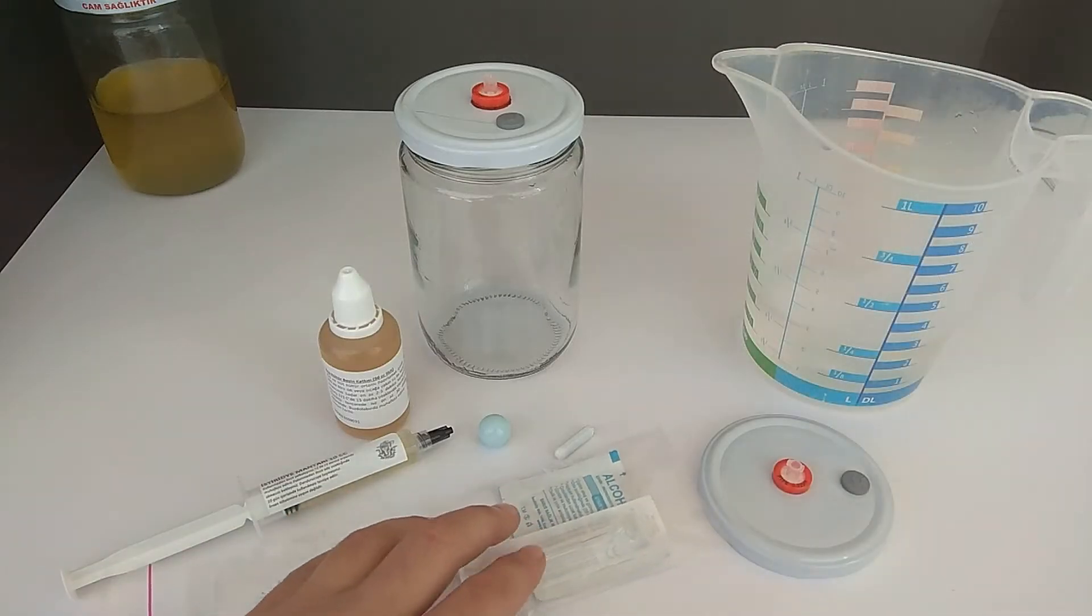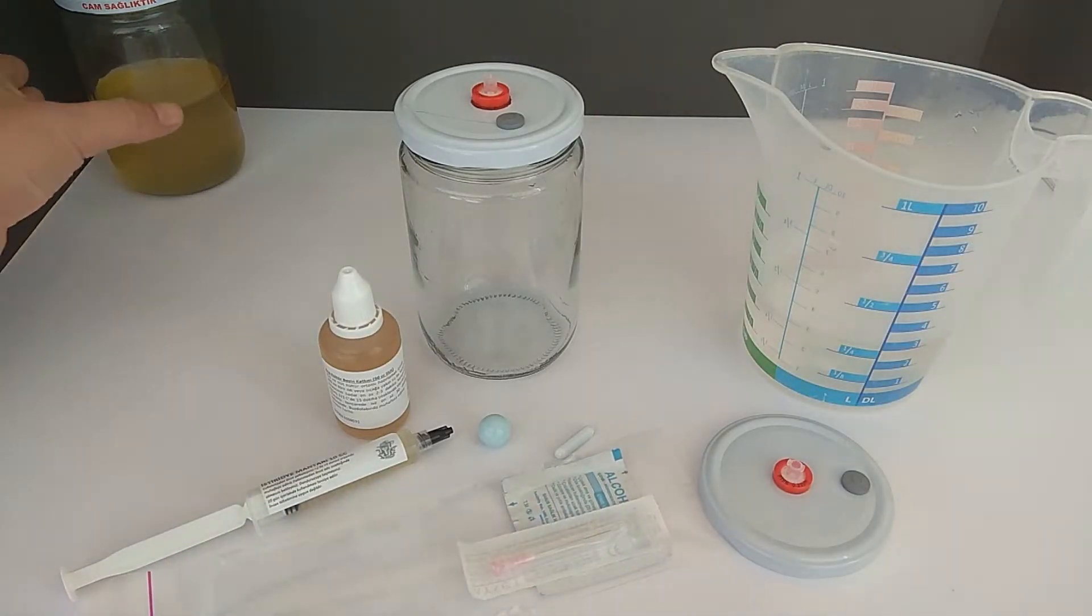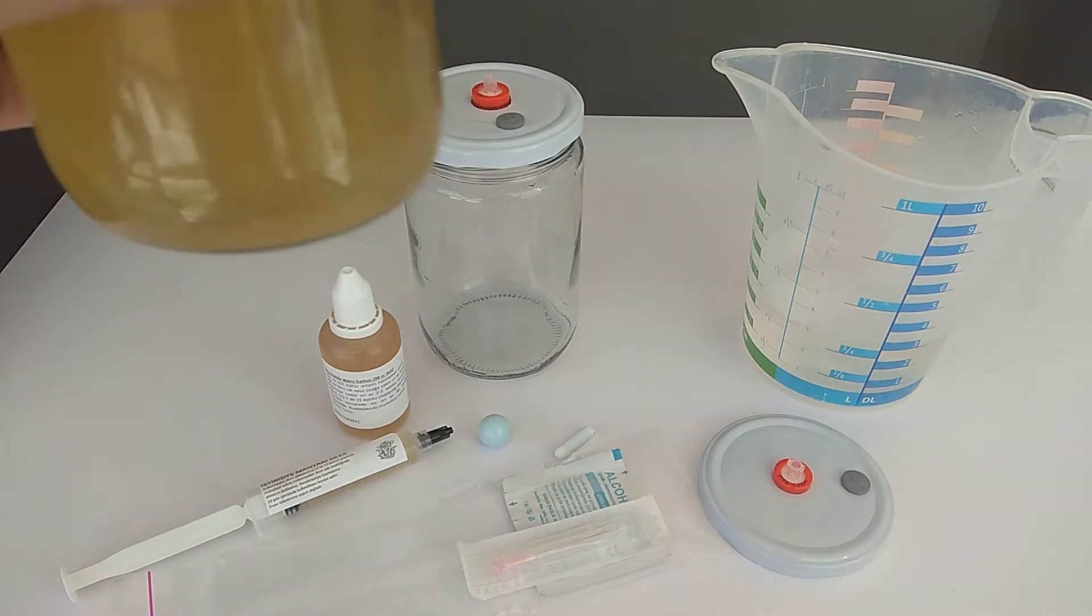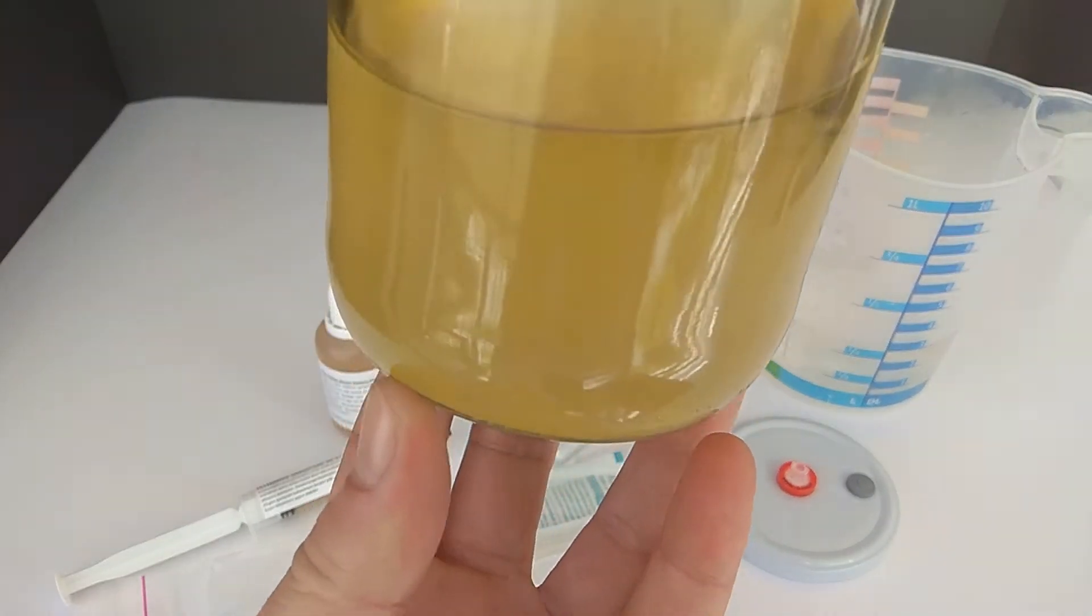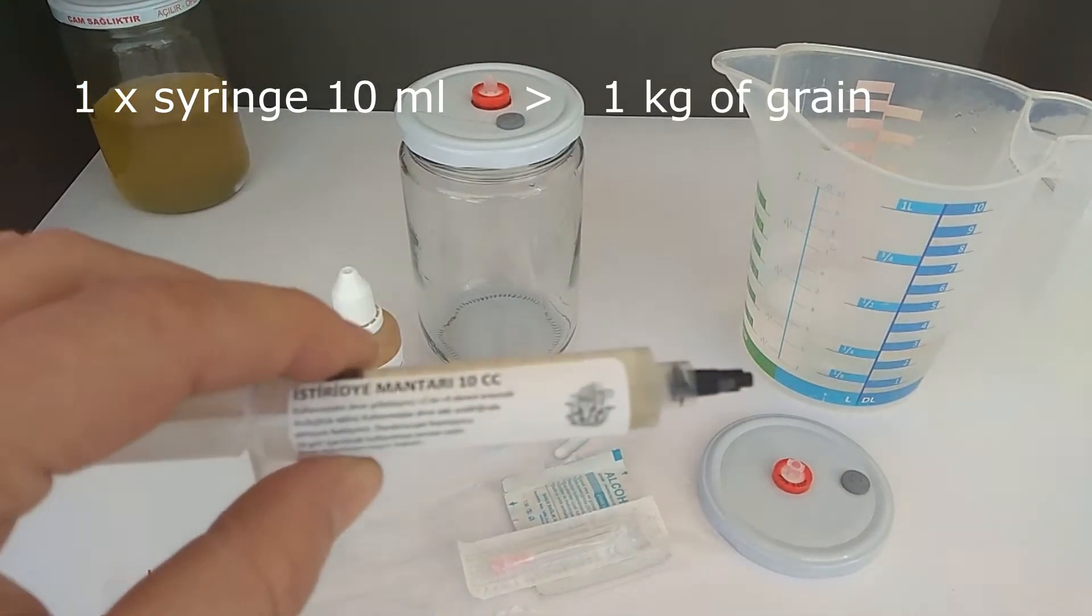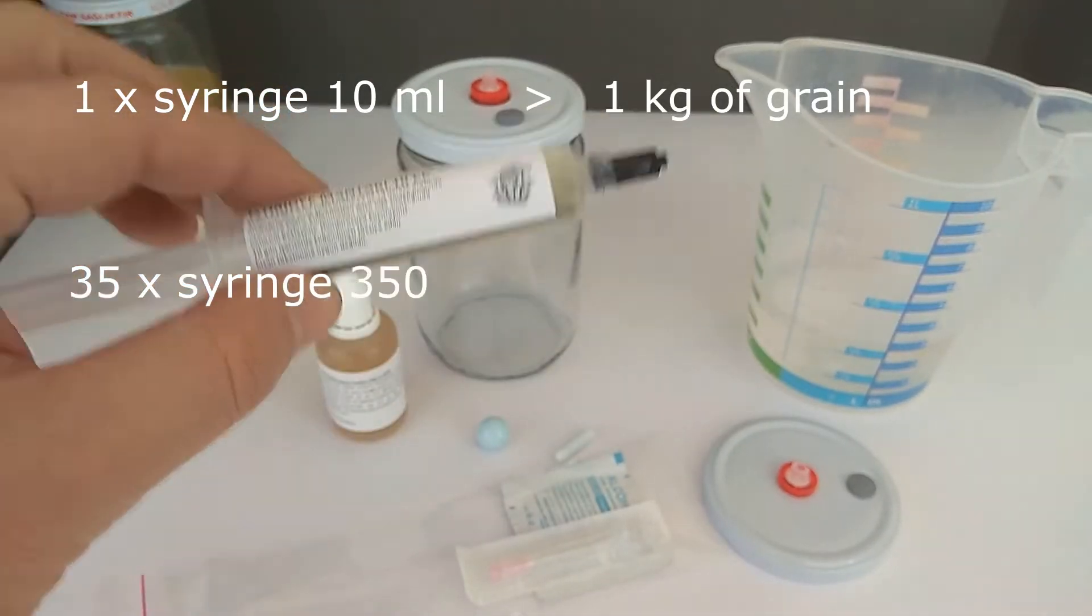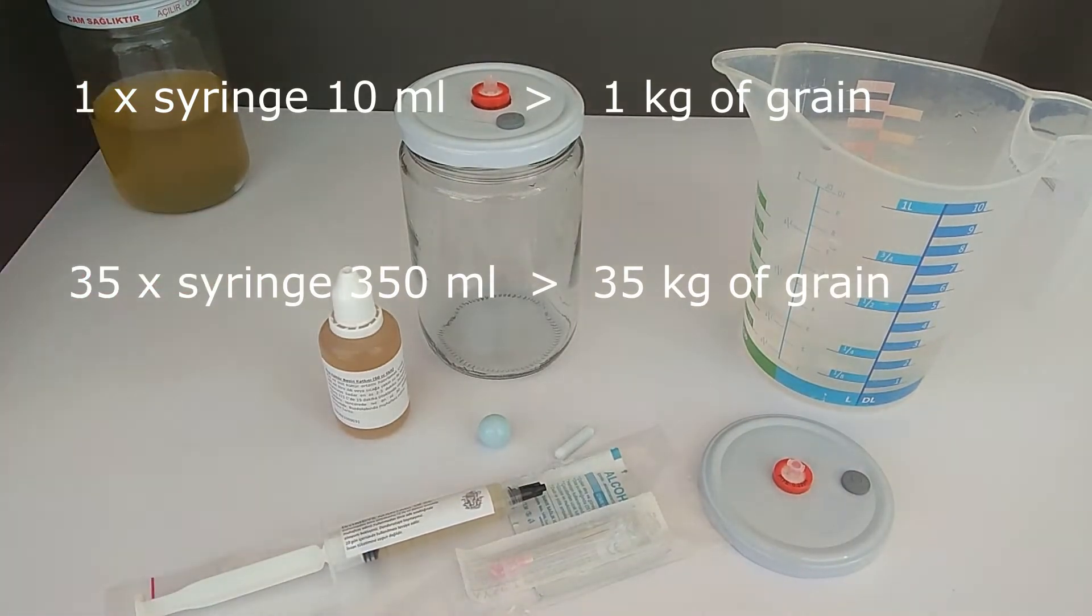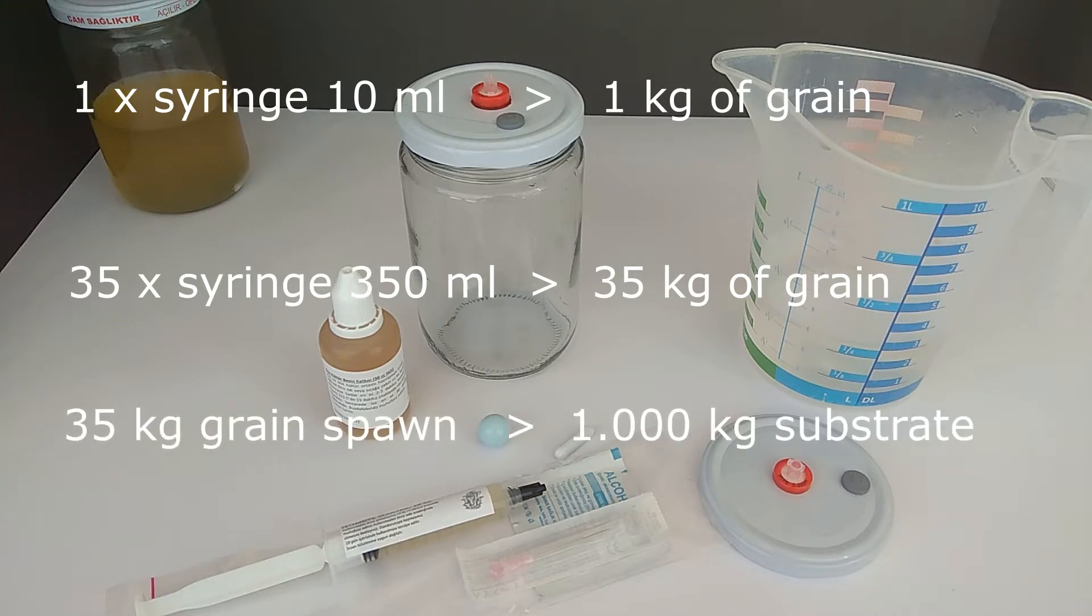This process will take about 20-25 days. After about 25 days, we will have obtained 350ml of liquid culture. We can inoculate 1kg of grain with a 10ml syringe. We will be able to produce up to 35kg of seeds with 350ml of liquid culture. With 35kg of seeds, we can prepare 1000kg of substrate.